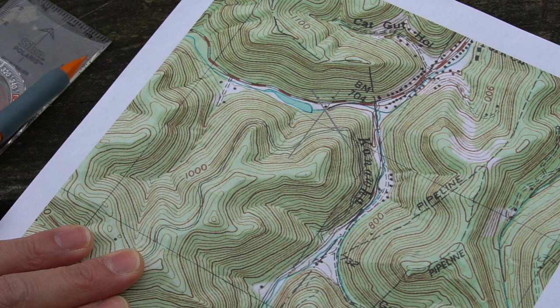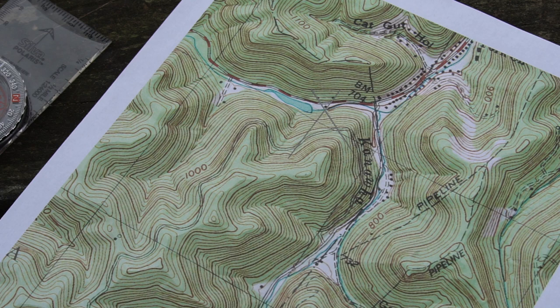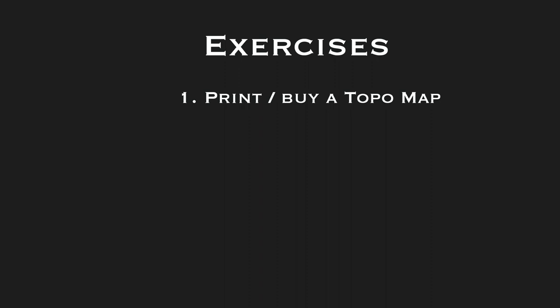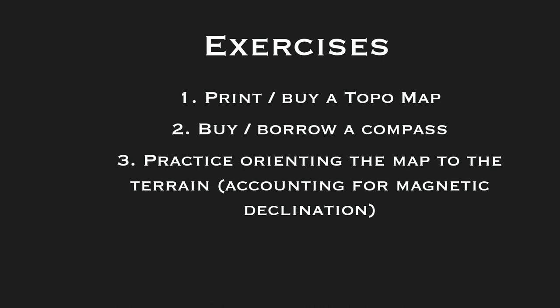On a larger scale you might be taking a bearing from one hilltop to another, from a radio tower to a hilltop, or using a railroad track, road, edge of a body of water, or a spur as your terrain features. Terrain feature recognition is a skill you just have to practice to get really good with. Here are some things you should be able to do now: download a map from Cal Topo, buy or borrow a compass, practice using that compass to orient your map to the terrain, and practice shooting bearings at objects. In the next video we're going to look at how to find your pace count and how to use that to navigate through your environment. Hope you like this video — please hit that like and subscribe, and I'll see you in the next video.